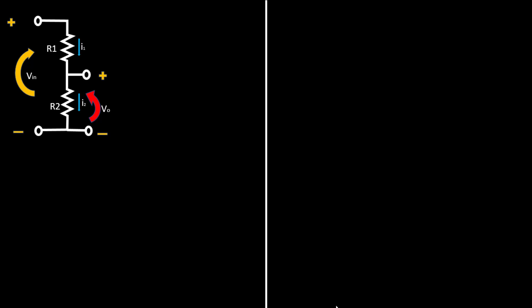If we observe the circuit clearly, we can see that I1, the first current entering, is equal to I2, because the current flowing through resistors connected in series is the same. So I1 is equal to I2. Also, if we look at Ohm's law, we see that V equals IR. Therefore, the entering voltage Vin is equal to I multiplied by the two resistors, R1 plus R2.